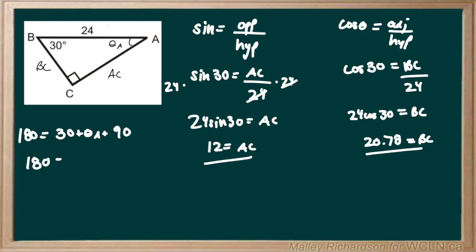So adding up the right side, we have 30 plus 90 gives us 120 plus theta A. To isolate theta A, we want to subtract 120 from both sides. And we get 180 minus 120 to give us 60 degrees is our theta A.